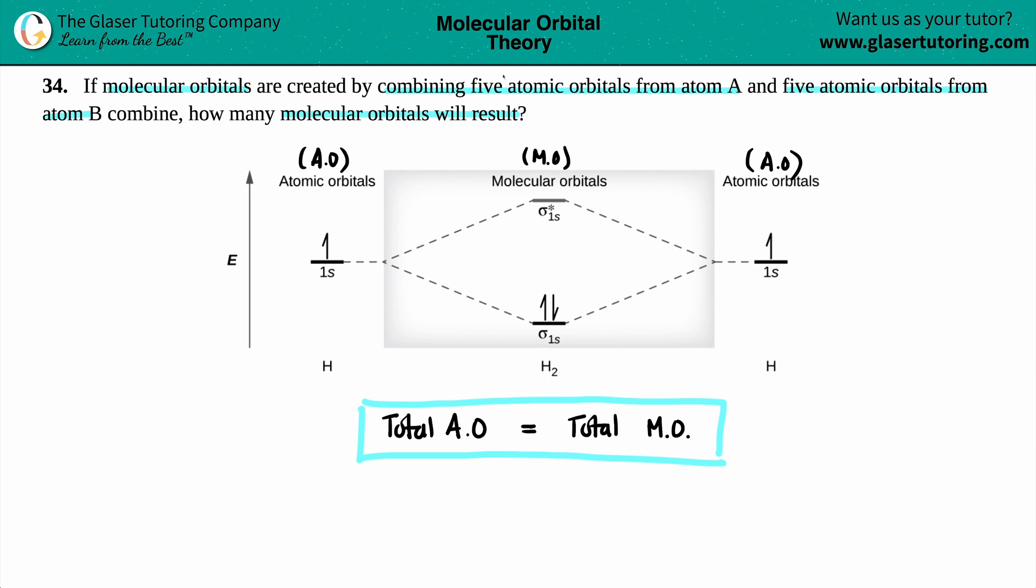So now they're saying that we have five atomic orbitals from atom A. So I have five atomic orbitals from atom A coming in with five atomic orbitals from atom B. How many molecular orbitals? In total.